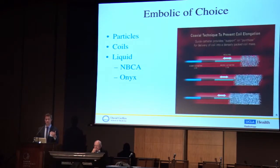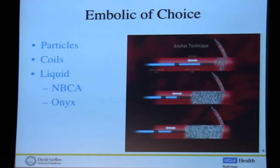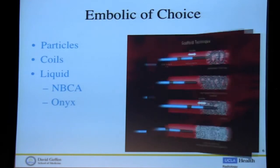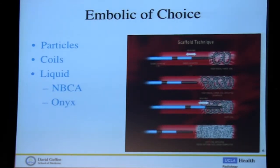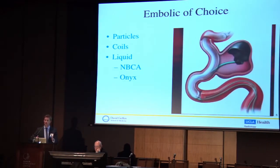Even using large particles like embospheres can be problematic — they can distend and be crushed into different shapes that squeeze through. You can use coils, and there are a lot of ways to do it: a packing technique, anchoring within a branch vessel to pack behind it, or a scaffold that allows you to use different-sized coils to maintain good hemostasis. But that only blocks off the area you're in. In these kinds of neovascularity regions, where you're trying to treat not just the target vessel but also the distal branches, a liquid embolic can be very helpful.